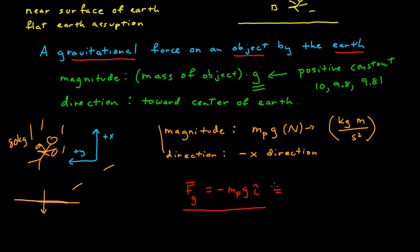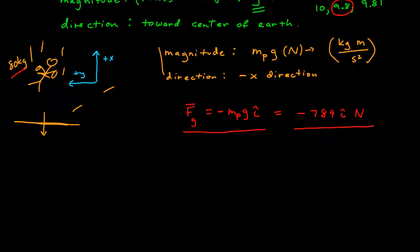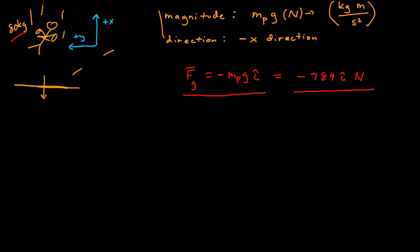We can calculate that: if the mass is 80 kg and we use 9.8 for g, the gravitational force is negative 784 î newtons. So we have a force with a magnitude, a direction, and units. Let's do a couple more examples to get some more practice.